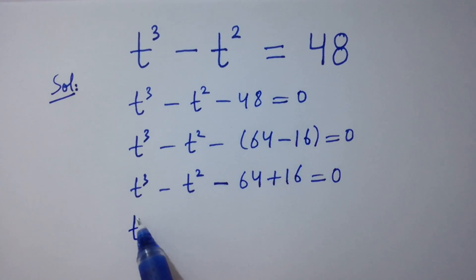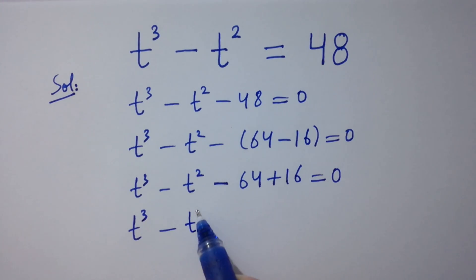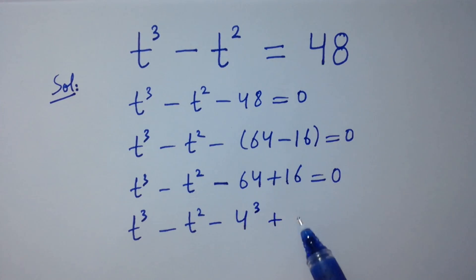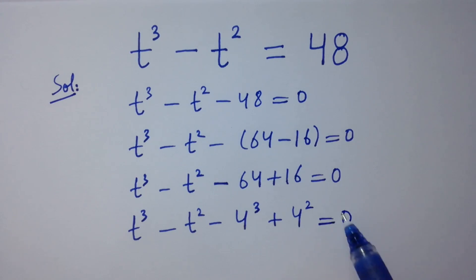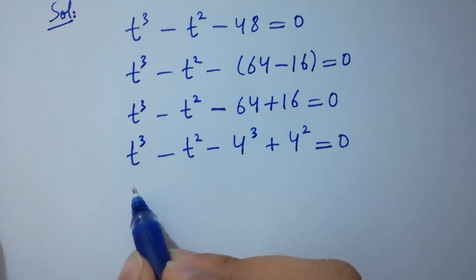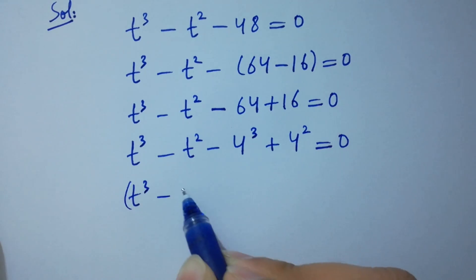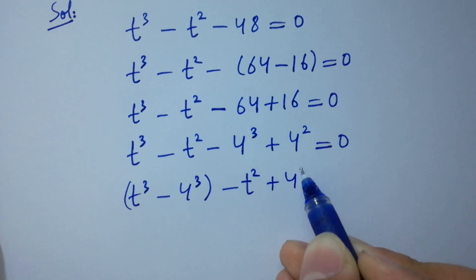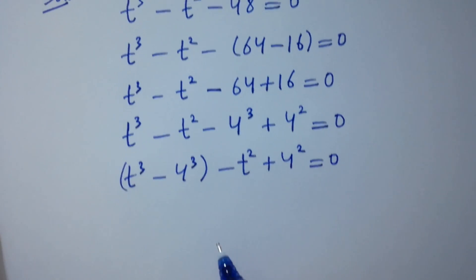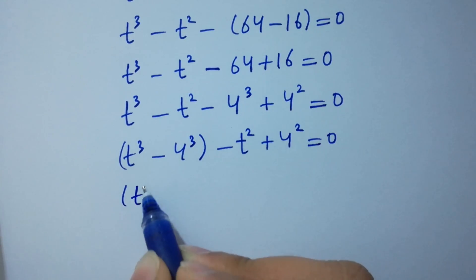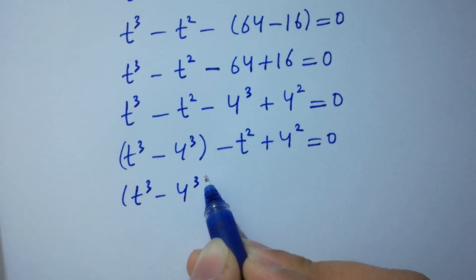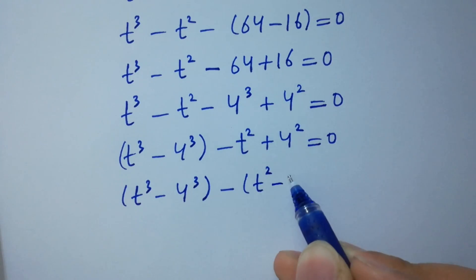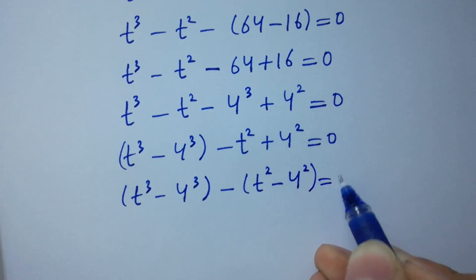Simplifying: t cube minus 4 cube minus t square plus 4 square equals 0. We can write t cube minus 4 cube, then take minus common from t square and 4 square terms, giving t cube minus 4 cube minus (t square minus 4 square) equals 0.